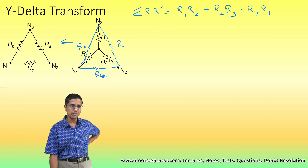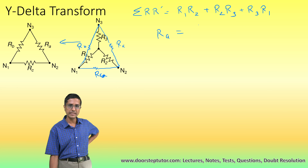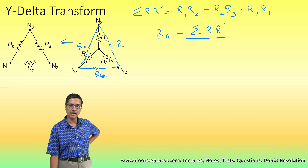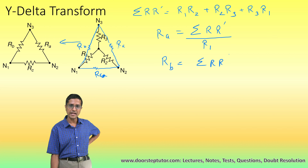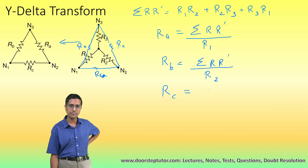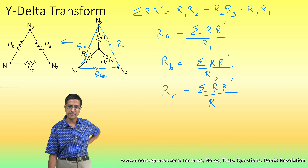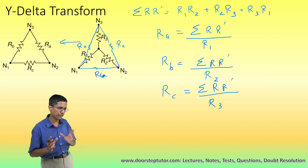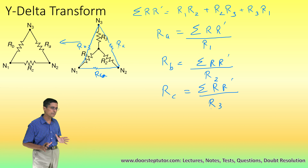Now I calculate Ra, Rb, and Rc. Ra is R' divided by the resistance opposite to Ra, which is R1. Rb is R' divided by R2. And Rc is R' divided by R3. Very simple — just remember these formulas.